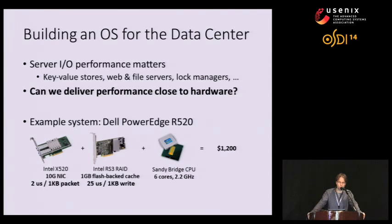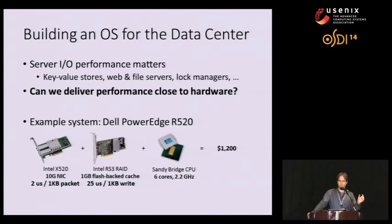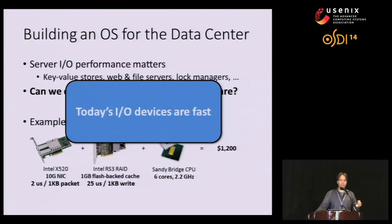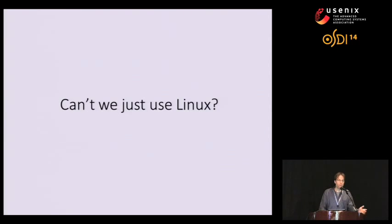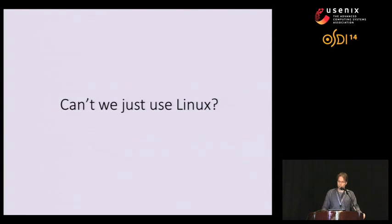Similarly, the RAID controller can persist a one-kilobyte write operation to its local persistent cache within 25 microseconds. The takeaway is that today's I/O devices are really, really fast. We might still ask: can't we just run Linux on such a system? After all, it should be the canonical choice. So let's examine that.